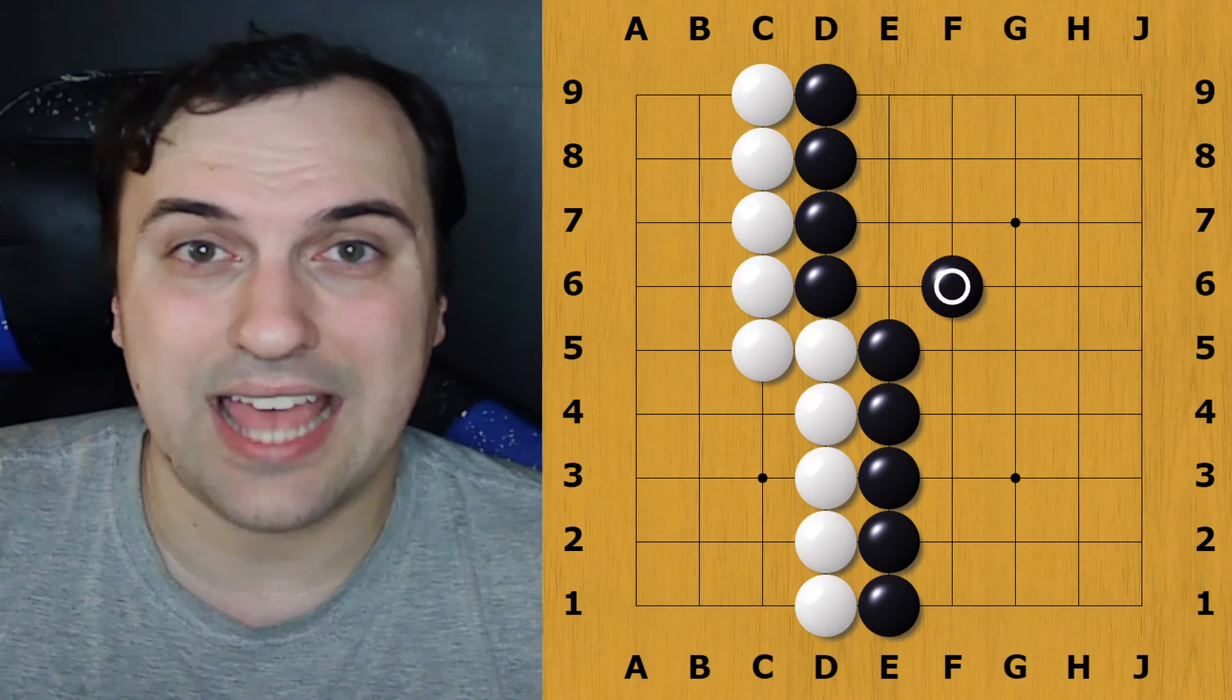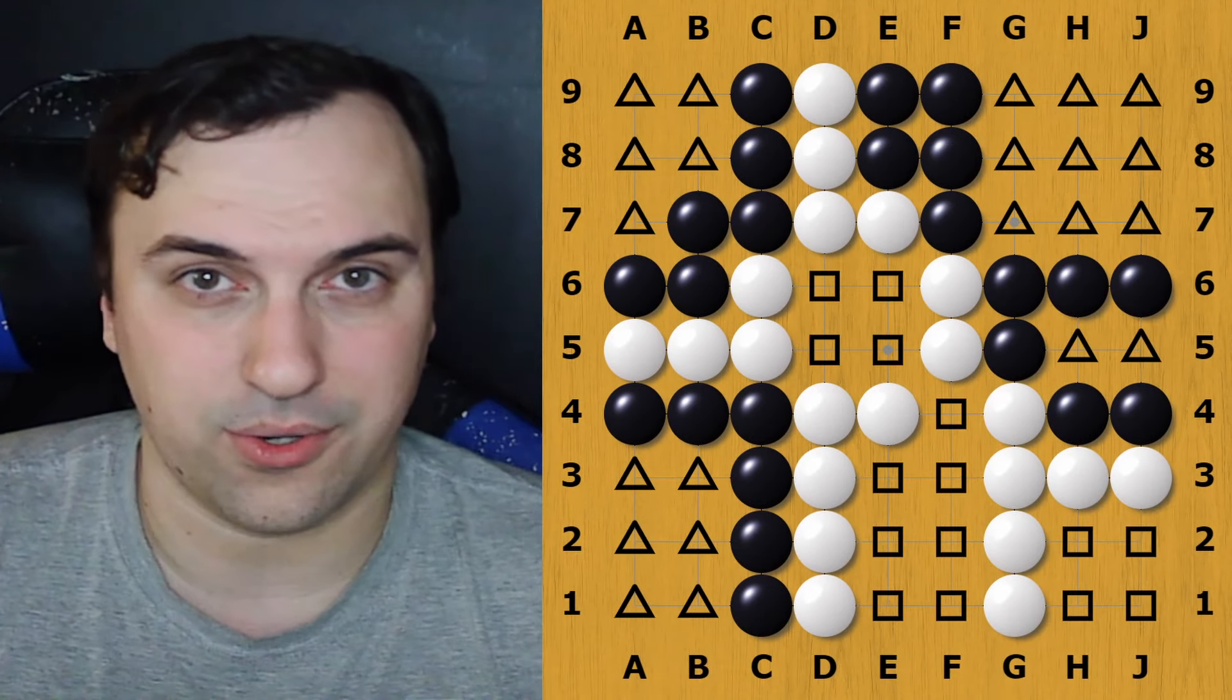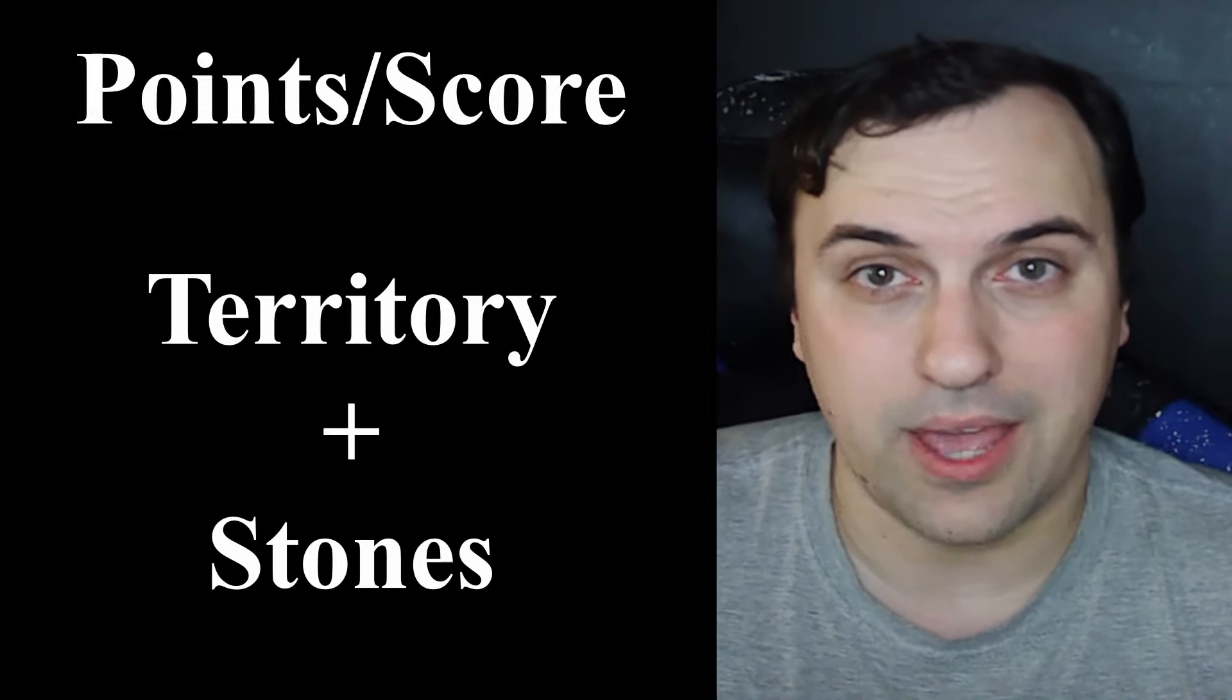The objective of Go is to have more points than your opponent at the end of the game. Any area that is surrounded by a single color is considered territory. Your points, or score, at the end of the game is the amount of territory you have, plus the amount of stones you have on the board.